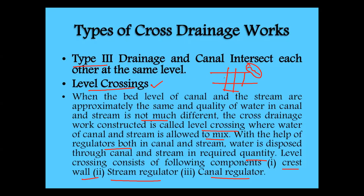In a level crossing, the canal and drainage are crossing at the same level and the water quality in the canal and drainage does not differ much. We control the water flow in the canal as well as the stream using cross regulators. One crest wall needs to be constructed for the canal so that drainage water is not allowed to enter freely.